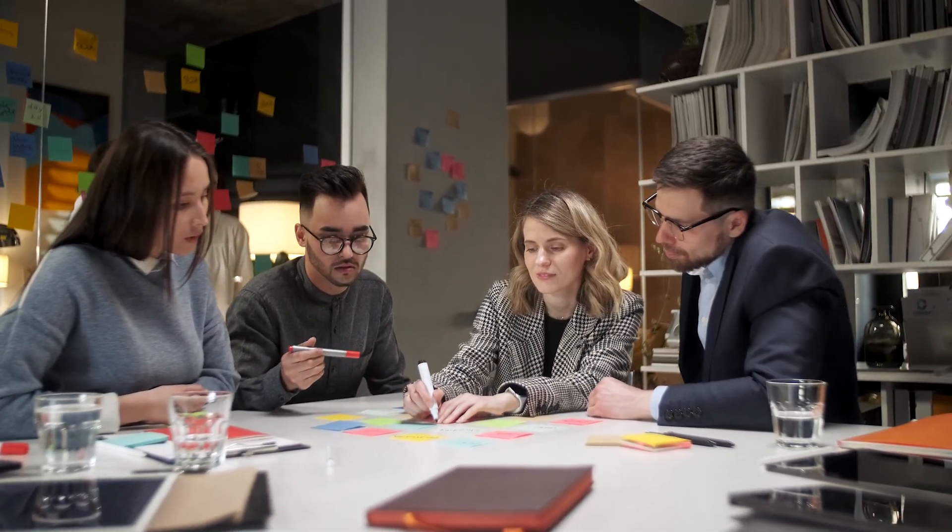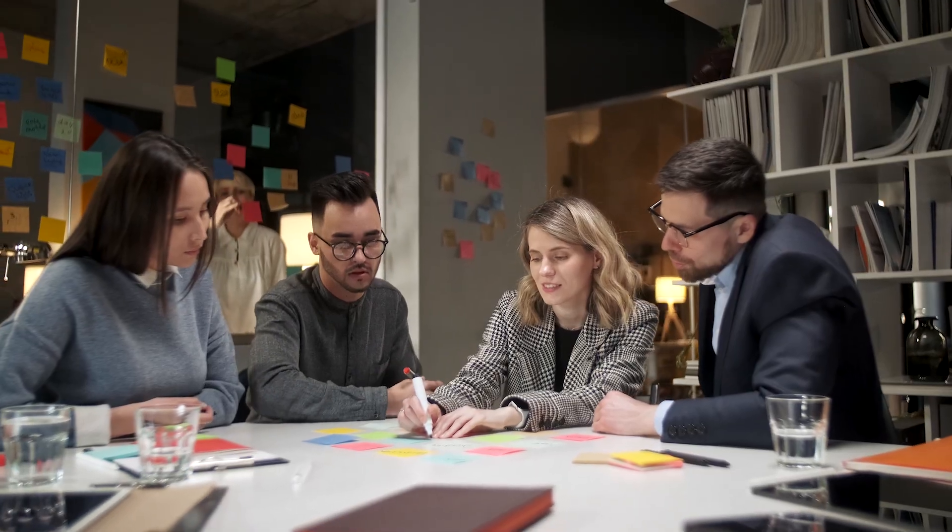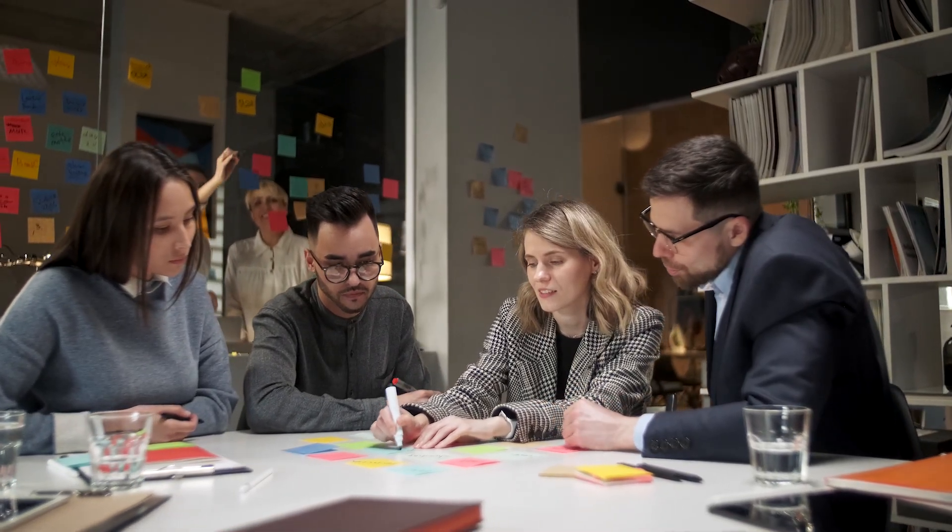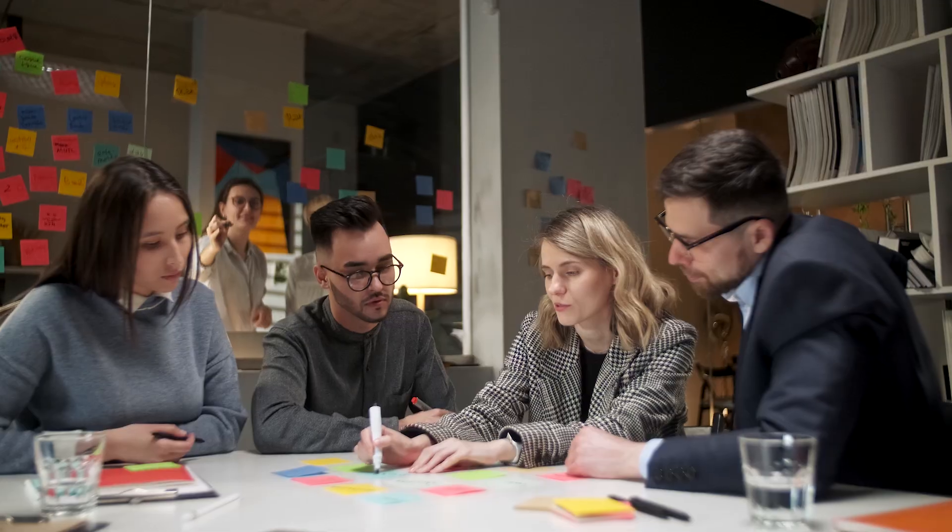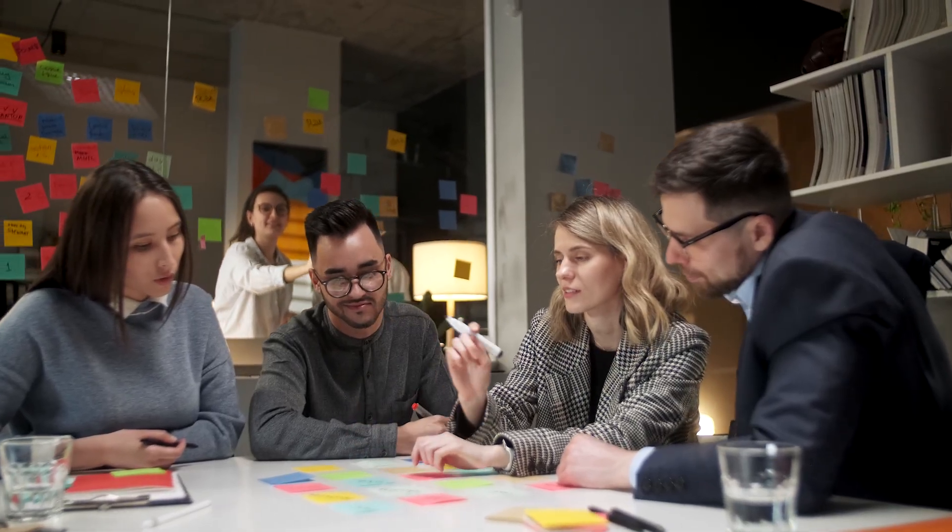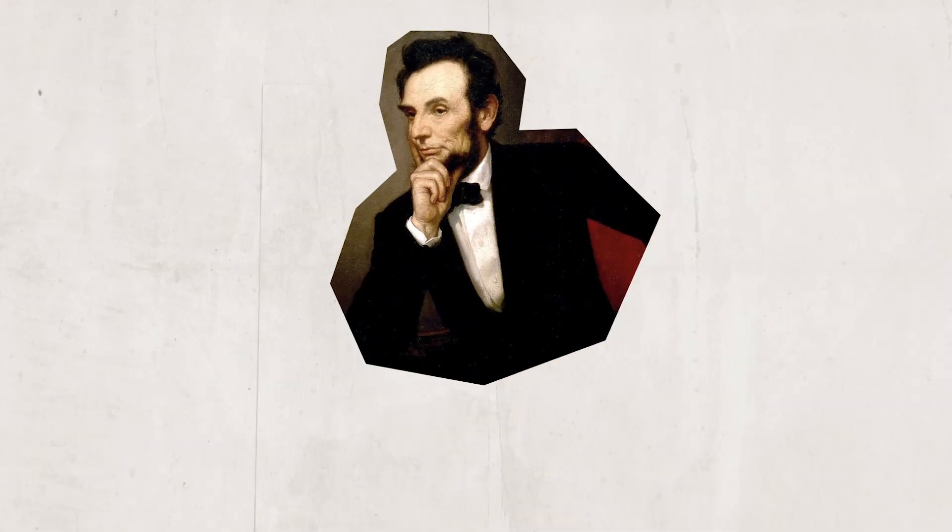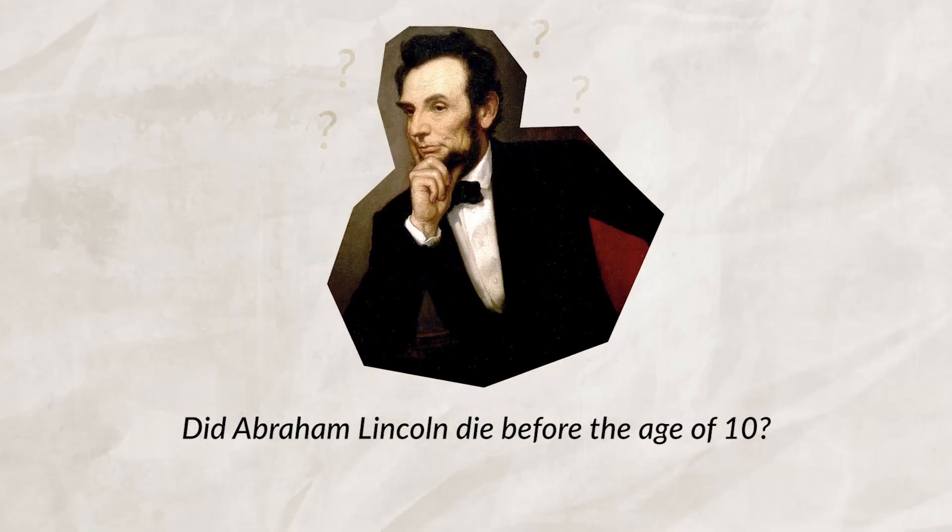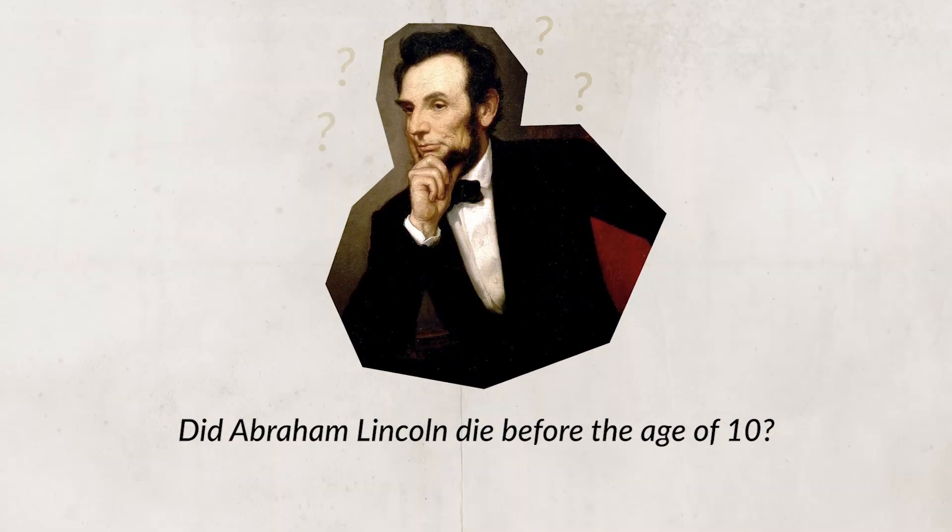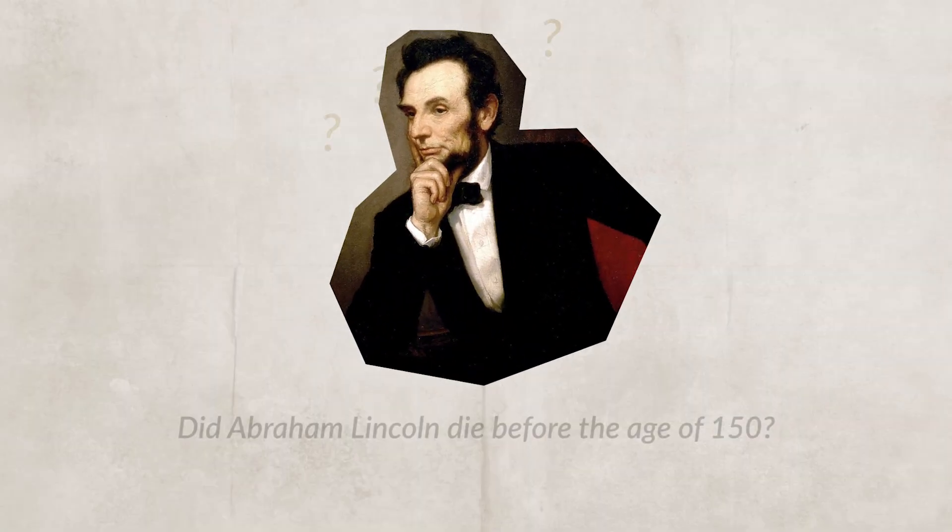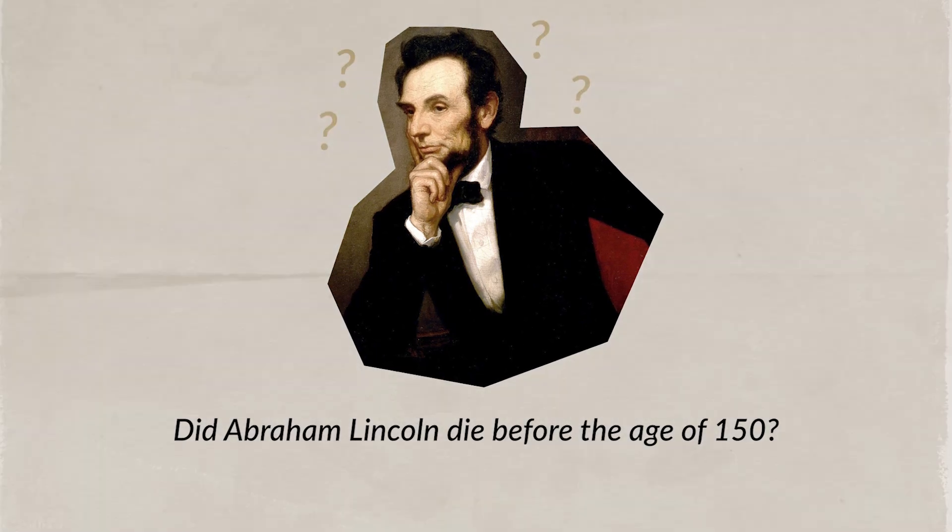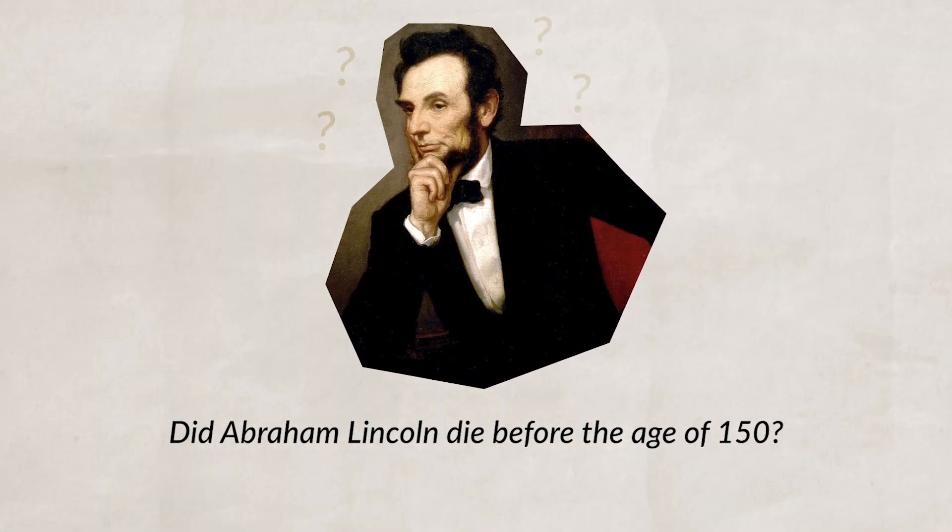When we come into contact with new information that we are unfamiliar with, we will often use anchoring, which is when we make judgments about new information based on existing information we have. For example, if I was to ask you whether Abraham Lincoln died before age 10, I have given you an anchor of 10 years old, which clearly is not right, but I would bet this would cause your answers to skew towards the lower side of ages. On the other hand, if I asked you whether Abraham Lincoln died before the age of 150, this would skew your answers to the higher side of the ages. Notice both these anchors are incorrect, but we use them to try and get closer to the correct answer.